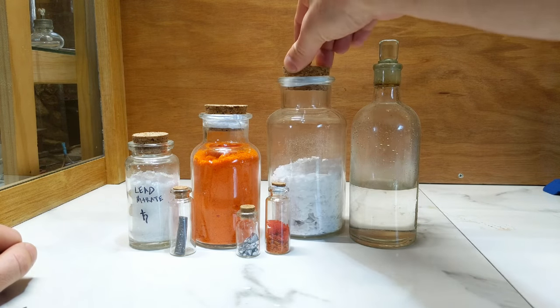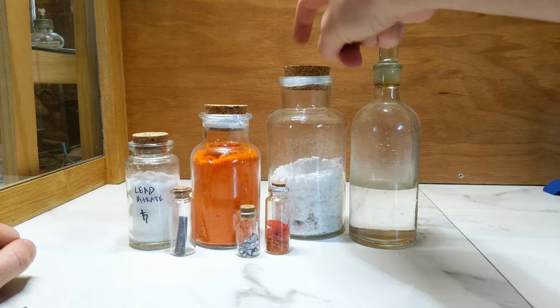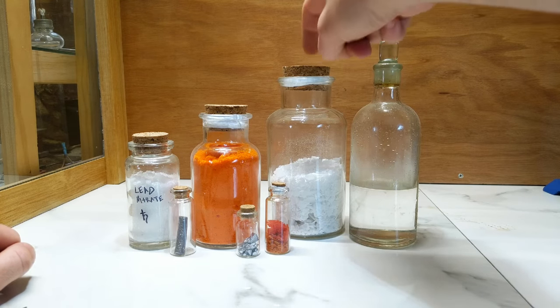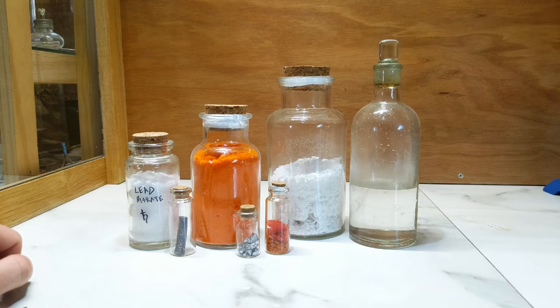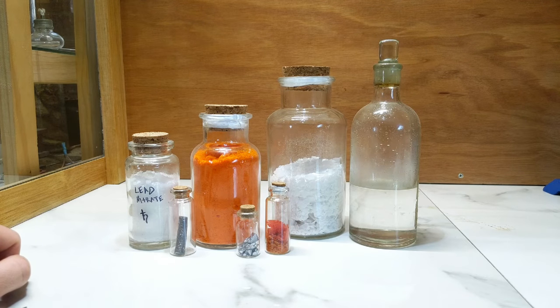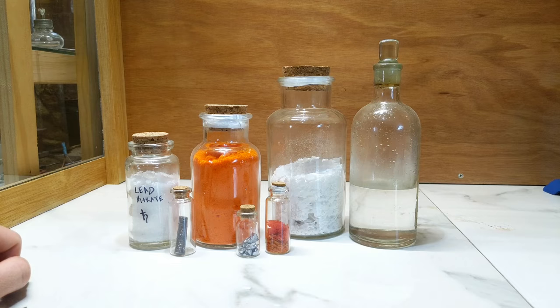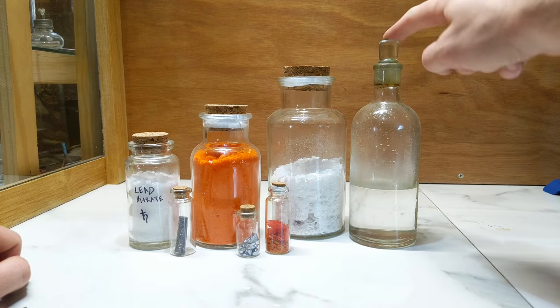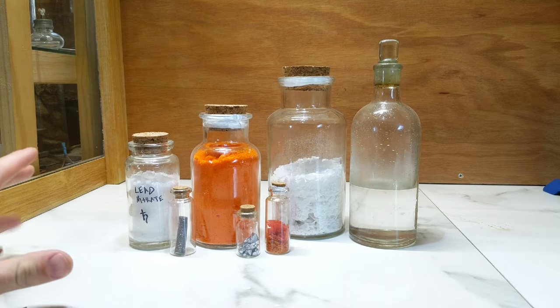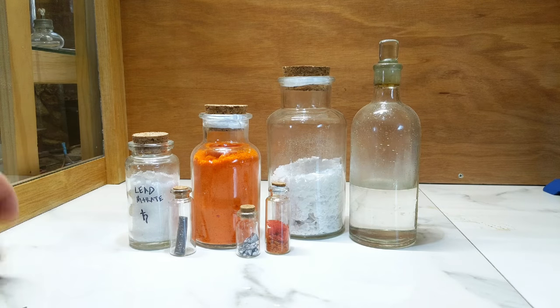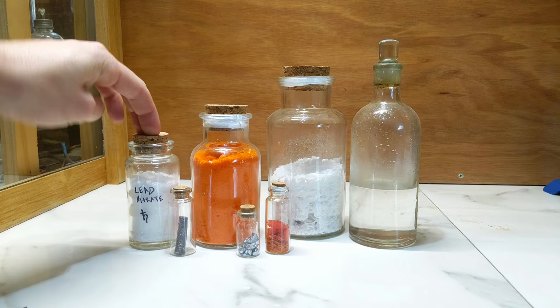Up the back here we have some potassium hydroxide, which is an alkaline which we'll be using at a later stage for making some of the orange and red variants of the chromate pigments. And we also have some sulfuric acid here too, which will aid us in making some of the lighter lemon yellow variants of the chrome pigment.